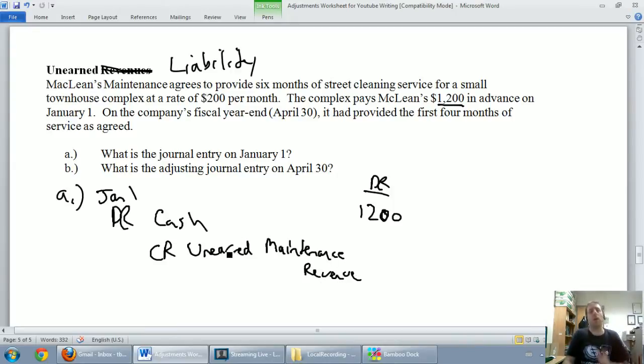So again, the word unearned means it's a liability. Unearned maintenance revenue, $1,200, and that of course goes under the credit heading. So, debit cash, because we've got $1,200 of cash coming in the door, credit unearned maintenance revenue. We want to earn maintenance revenue, we're going to as time goes by, but we haven't earned any yet. We owe these guys $1,200 worth of maintenance.